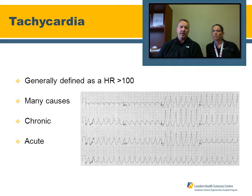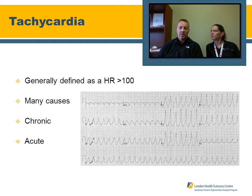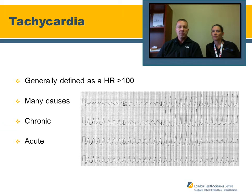Tachycardia is defined as a heart rate greater than 100 beats per minute. There are many different causes, ranging from myocardial ischemia to electrolyte imbalances and hypoxia. Exercise will obviously increase a person's heart rate. Most people can tolerate an elevated heart rate between 100 and 120 beats per minute without any adverse effects.